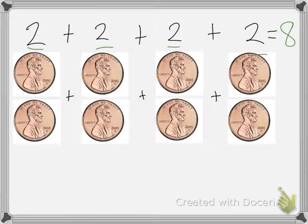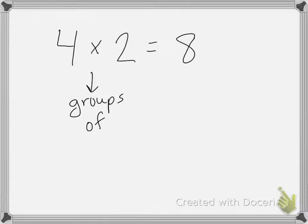Now there's a shorter way of writing 4 groups of 2, and that is 4 times 2. This is called a multiplication symbol, and it is used to say groups of. So you would say 4 times 2 equals 8.